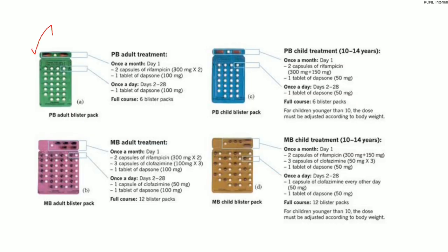For Paucibacillary patients, there are adult as well as pediatric groups. There are two types of blister packs. We will have Rifampicin in capsules and Dapsone in white tablets.